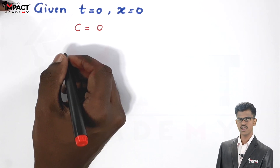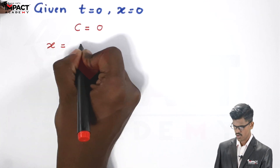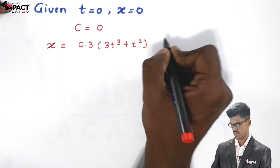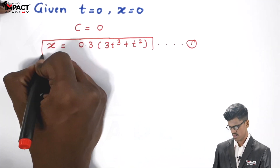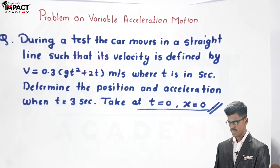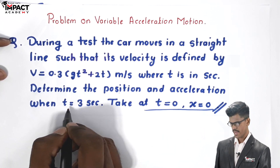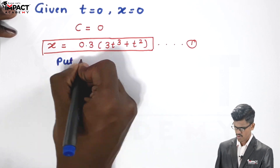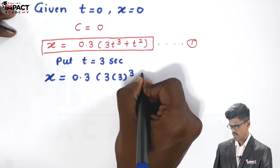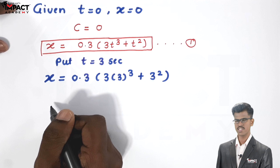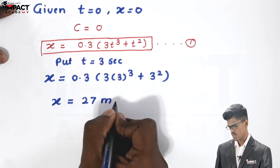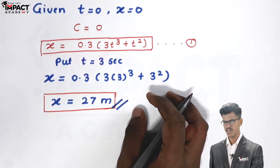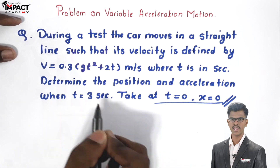So we get the first equation: x = 0.3(3t³ + t²). They ask the position when t = 3 seconds, so substitute t = 3 into equation 1. Solving this equation gives x = 27 meters. That is the position of the particle when t = 3 seconds.